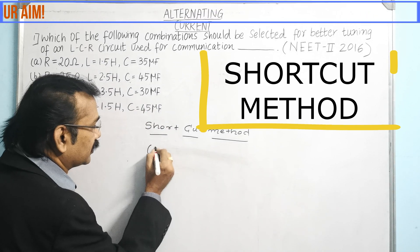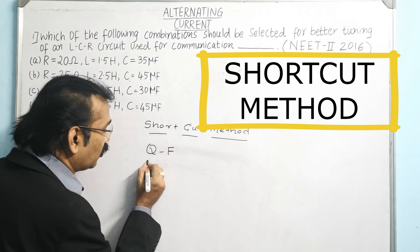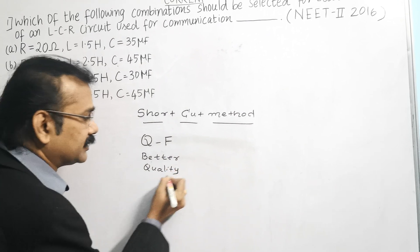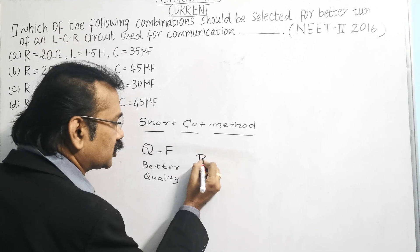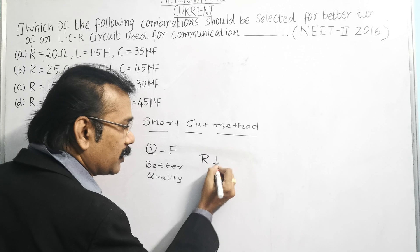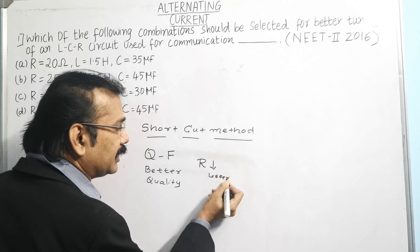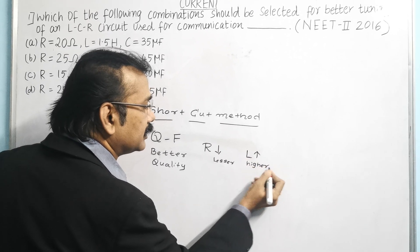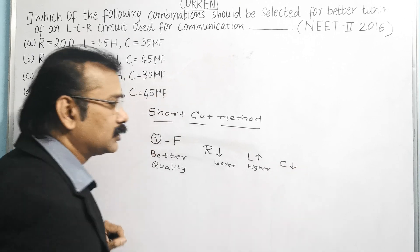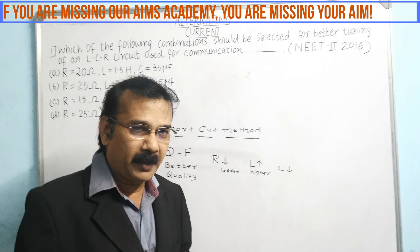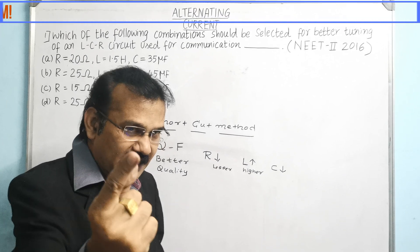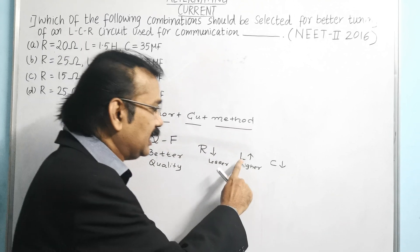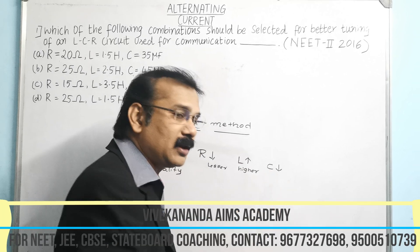For a better quality factor, remember just one point: for better quality, R should be lesser, L (inductance) should be higher, and C (capacitance) should be lesser. So for a better quality factor: R value should be lesser, inductance value should be higher, and capacitance value should be lower.